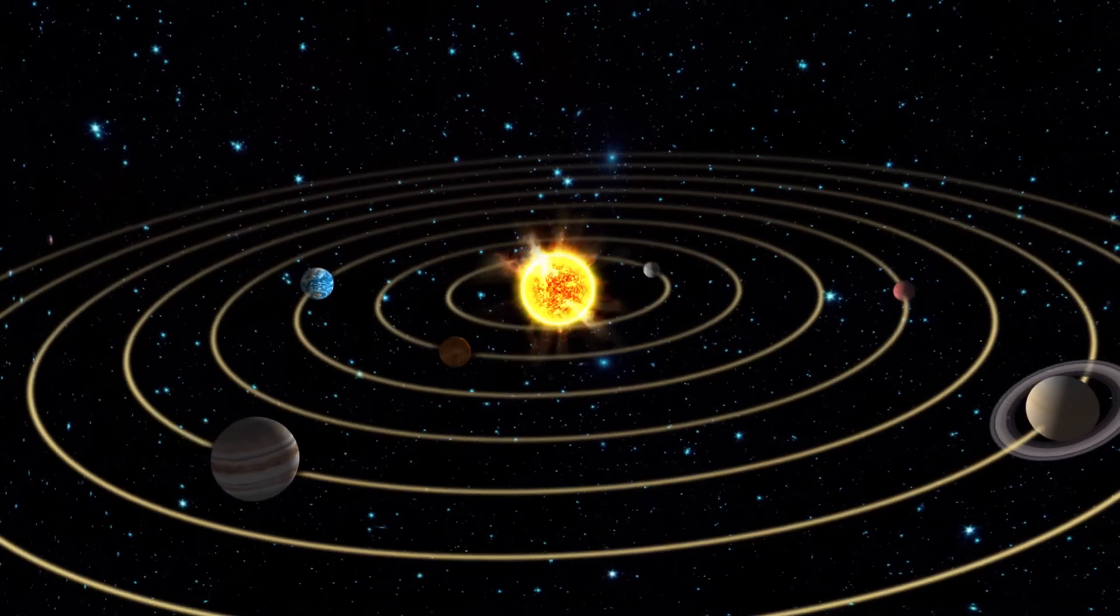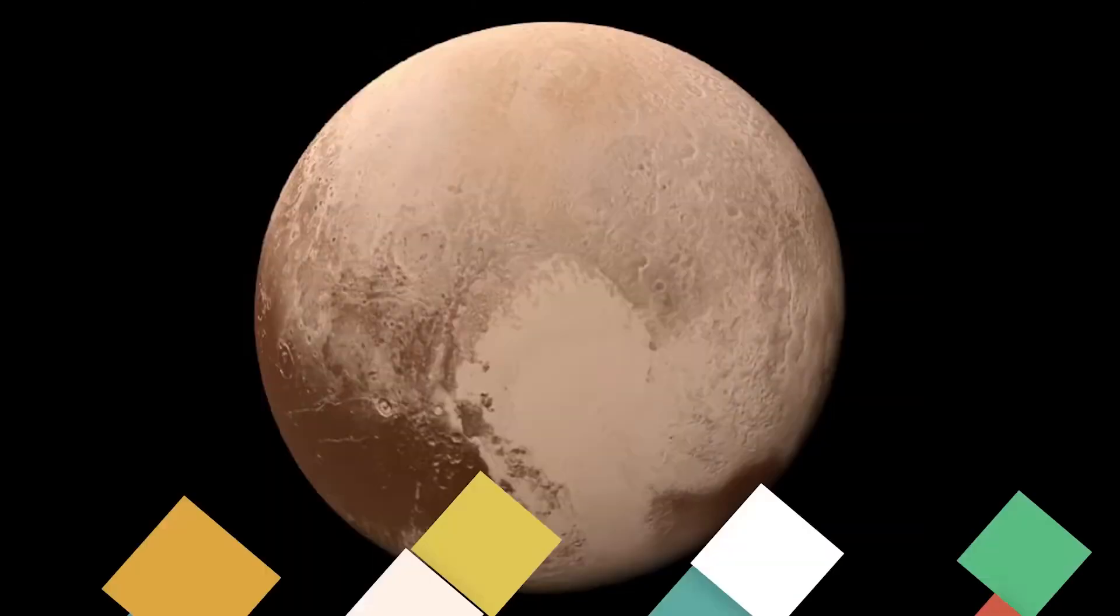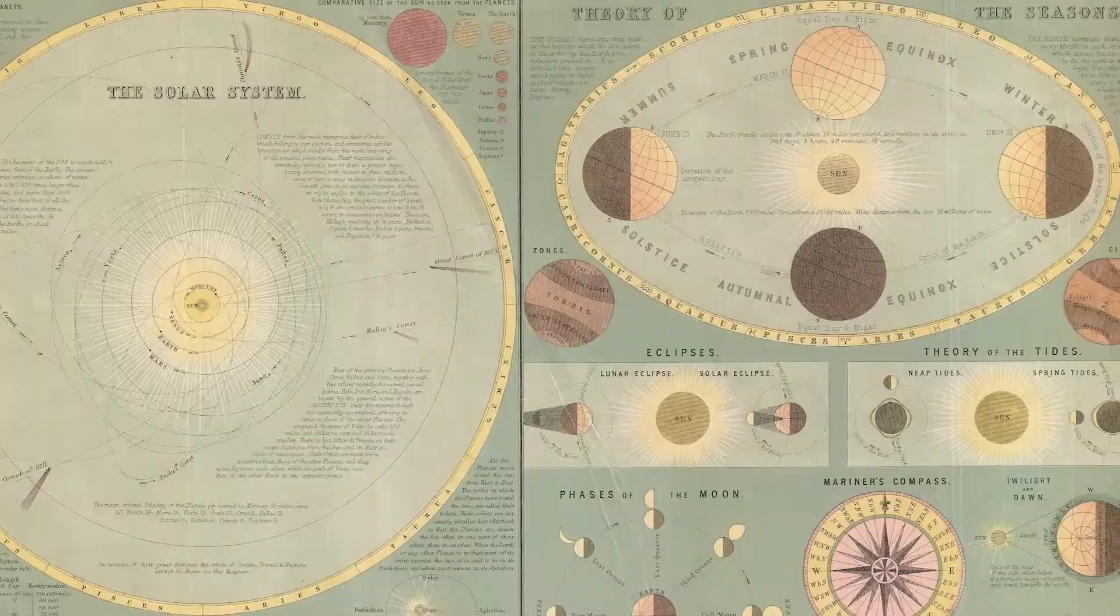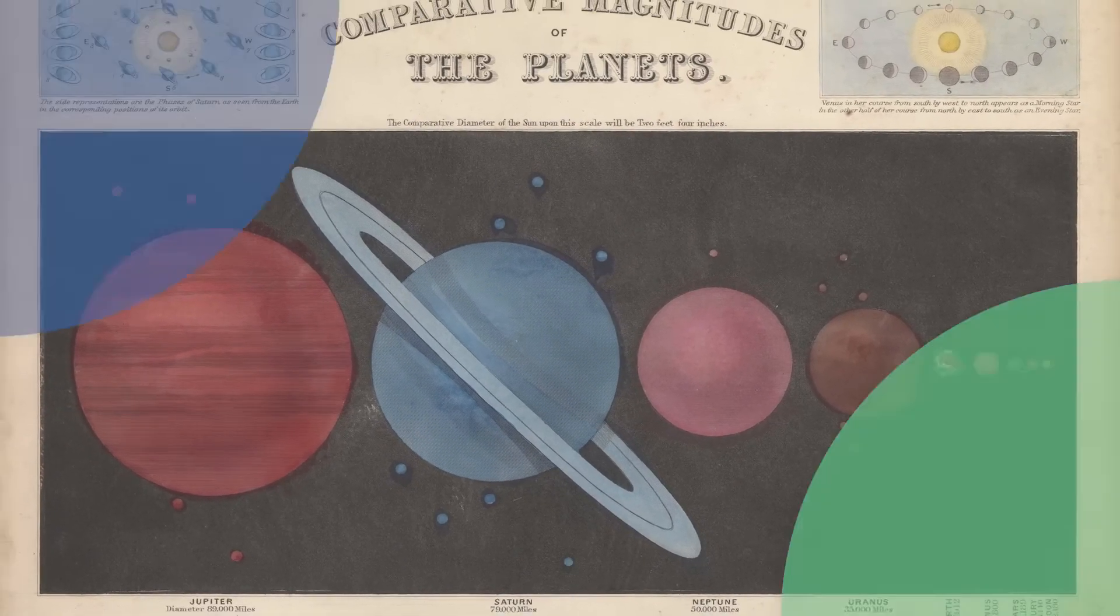If we keep going outward, we have three more things that historically have been called planets: Uranus, Neptune, and Pluto. These are Greek or Roman names. These planets weren't seen by the Greeks or Romans, but the discoverers wanted their planets to fit in with the existing mythological theme.